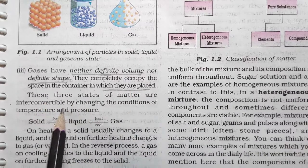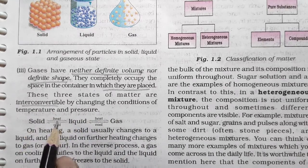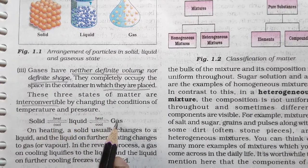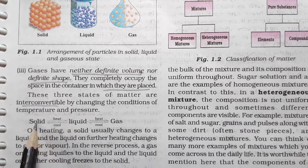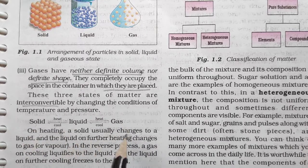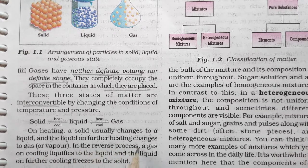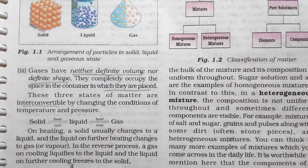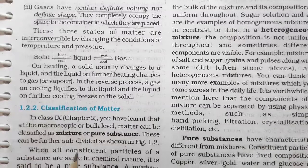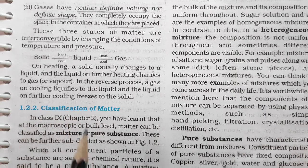These three states of matter are interconvertible by changing conditions of temperature and pressure. On heating, a solid usually changes to liquid, and the liquid on further heating changes to gas or vapor. In the reverse process, a gas on cooling liquefies to liquid and the liquid on further cooling freezes to solid. This concludes our discussion of three topics today; next time we will discuss the classification of matter.